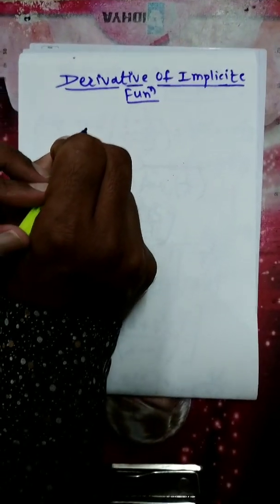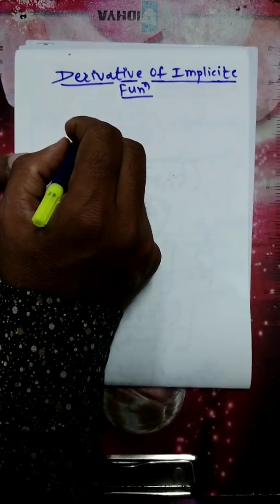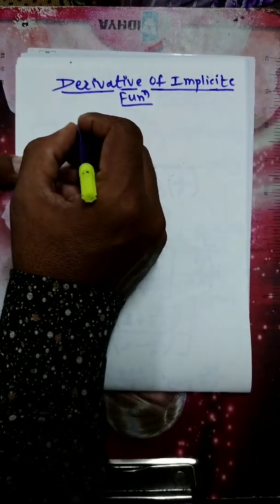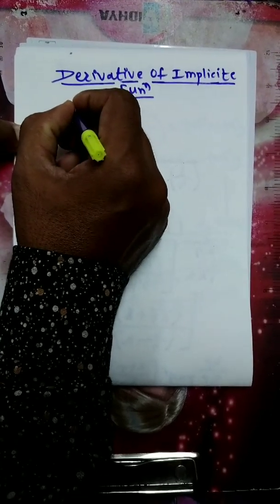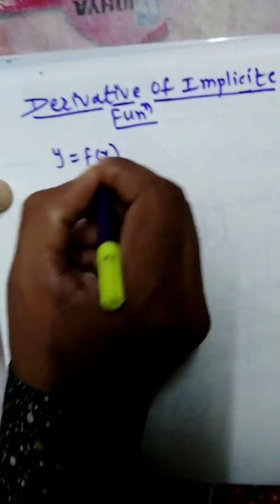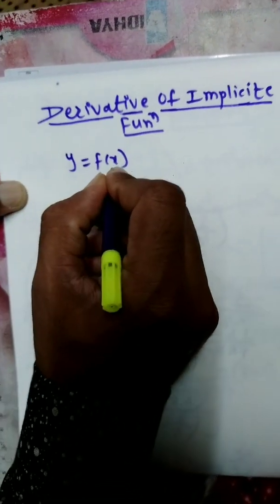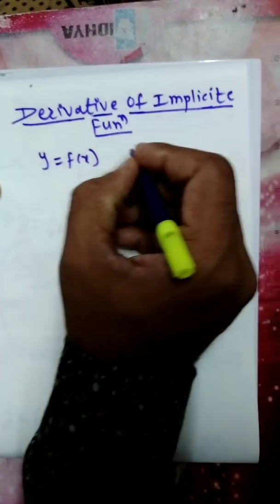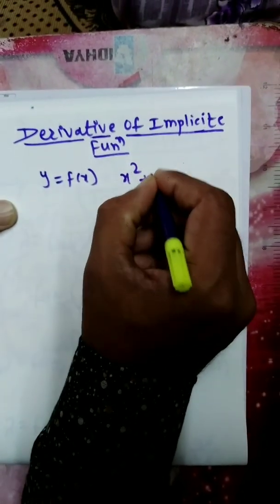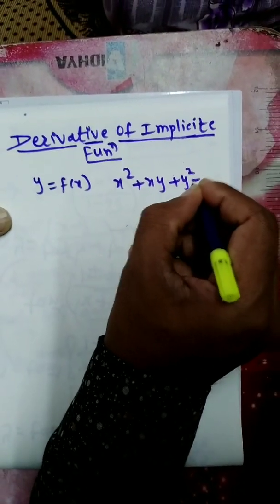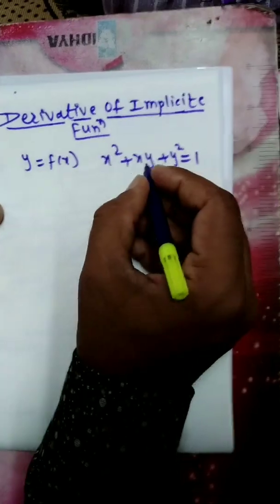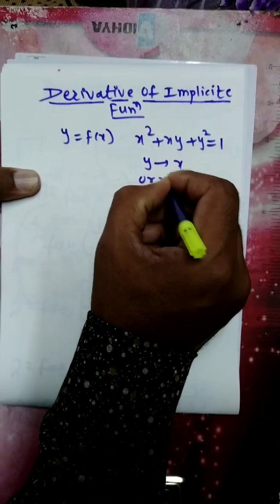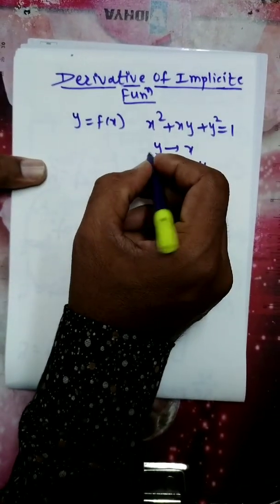Before we start this topic, let us first define what an implicit function is. There are two types of functions. The first is the explicit function — explicit means we can express y in terms of x, i.e., y as a function of x. In the implicit function, we cannot express y in terms of x. For example, x² + xy + y² = 1 — we cannot express y in terms of x or x in terms of y.